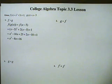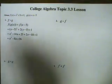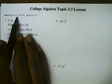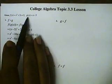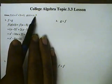College Algebra, Topic 3.3 Lesson. We're doing composite functions, and we have two functions. The function f, which equals x squared plus 2x plus 1, and the function g, which equals x minus 5.